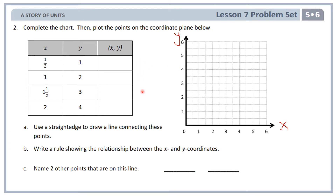2A says: complete the chart, then plot the points on the coordinate plane below. Here's my chart — I have my x and y coordinates. I need to make them into an ordered pair and then plot that onto the coordinate plane. I'll do the first two with you; you'll do the last two by yourself. For the first one, my x is 1 half, my y is 1. As the coordinate pair, that's 1 half comma 1. To plot that, I start at 0, go over 1 half unit — between 0 and 1 is 1 half — then go vertically 1 unit. Right there would be 1 half comma 1. The next one: x is 1, y is 2, giving us 1 comma 2. Starting at 0 comma 0, I go over 1 unit on the x-axis and 2 units on the y-axis, giving me the point 1 comma 2.